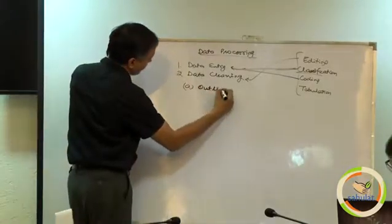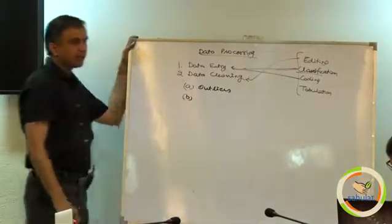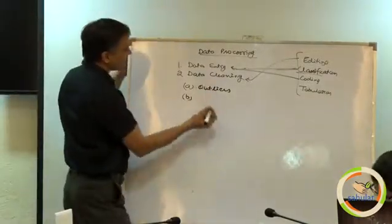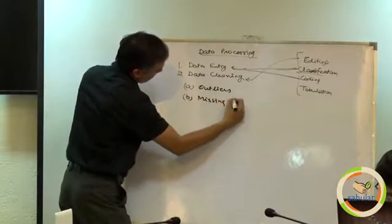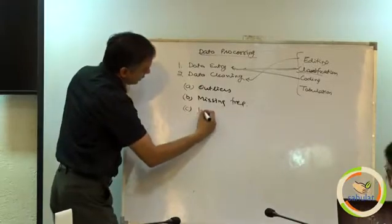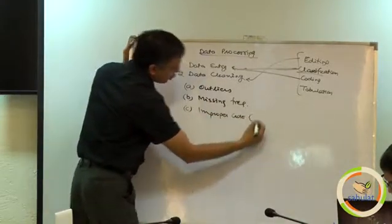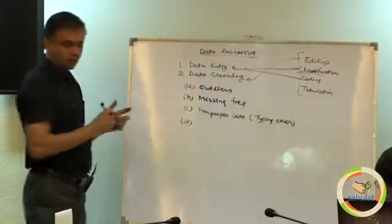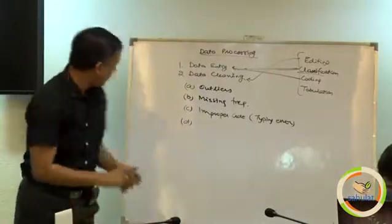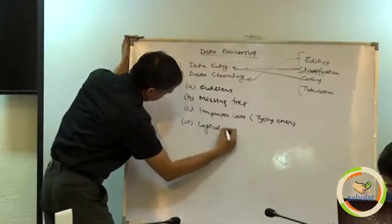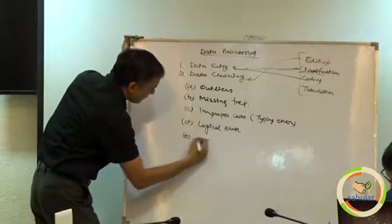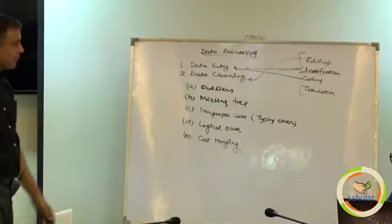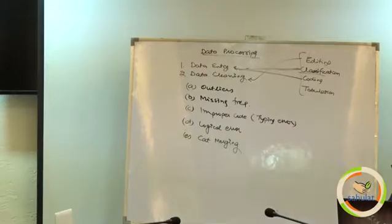It involves number 1 outliers, handling outliers, example of outliers, one of the example I gave yesterday Mataji anybody searched Mataji on Google, not Mataji Ahmedabad. The second is missing frequency, third is improper code that is sort of typing error, the fourth is logical error and the fifth is category merging.